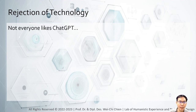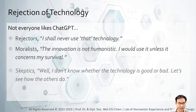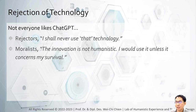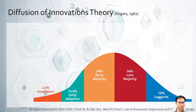When it comes to ChatGPT, for example, you may have heard comments like: 'I shall never use that technology,' or 'the innovation is not humanistic, lacks human touch, I would only use it for survival,' or 'I don't know whether the technology is good or evil, let's see how the other people use it.' In these cases, we see different attitudes to an innovation. This forms the second part of Rogers' diffusion of innovation theory.